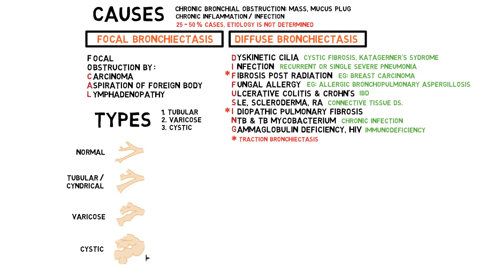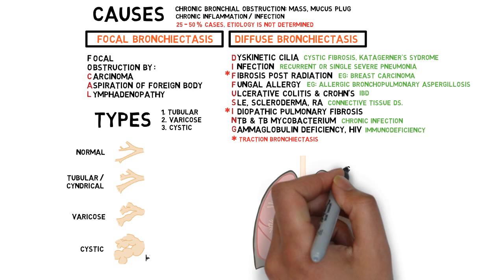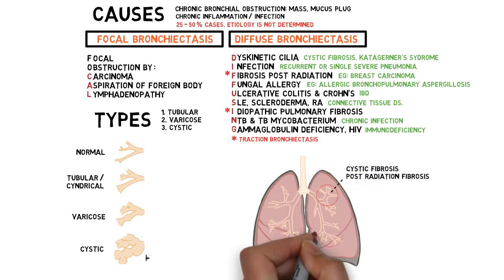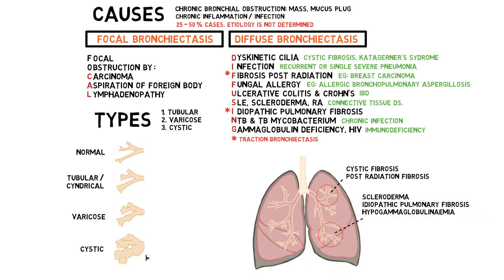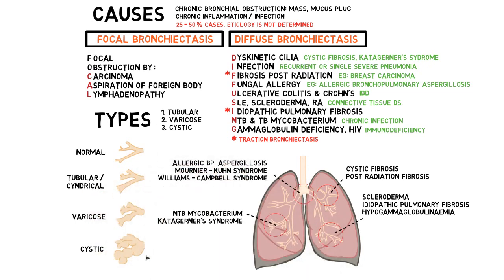The level of distortion increases going down the list. These types do not differentiate the cause but help with diagnosis — any of these three changes are bronchiectatic changes. The location of bronchiectasis helps identify the cause: diffuse bilateral upper lung zone bronchiectasis suggests cystic fibrosis or post-radiation fibrosis; lower lung zone suggests connective tissue disease, idiopathic pulmonary fibrosis, or hypogammaglobulinemia; middle zone suggests non-tuberculous mycobacterial infection or Kartagener syndrome; and central bronchiectasis suggests fungal allergy or other syndromic diseases.